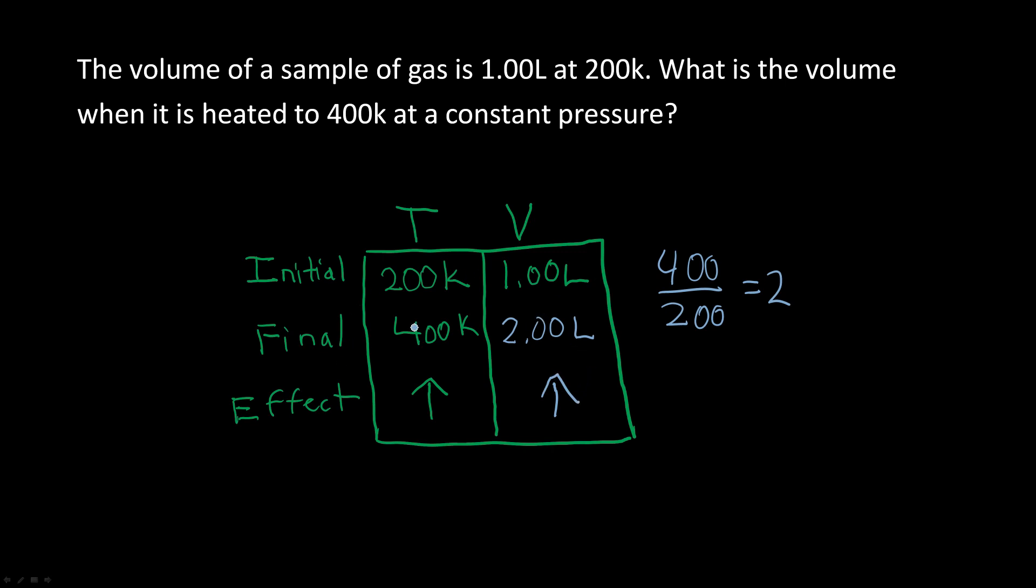So you have to divide the final by the initial and multiply that by the initial volume to get the final volume. And that's how you solve a Charles Law problem.